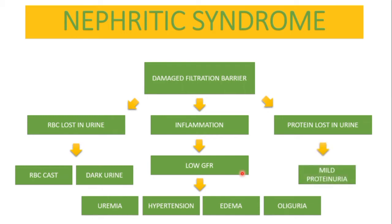Due to protein loss in urine, there is only a mild protein loss in nephritic syndrome because the patient is oliguric — not producing much urine. So even though protein is being lost, it is not as much as in nephrotic syndrome. The main things to remember for nephritic syndrome are edema, oliguria, and RBC casts.